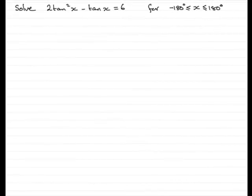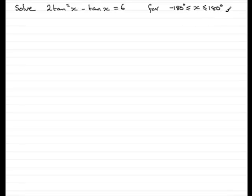Welcome to this example on solving trig equations. We have to solve 2tan²x minus tan x equals 6, for x between minus 180 degrees to 180 degrees inclusive.